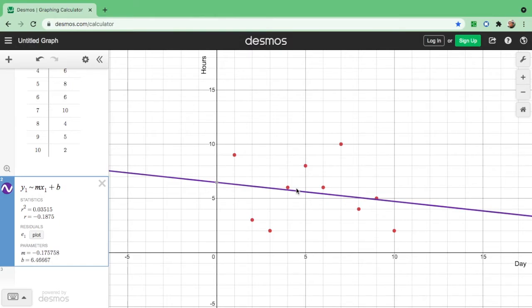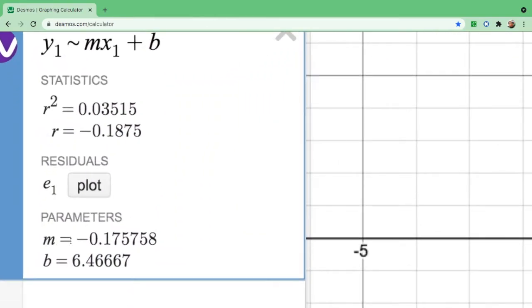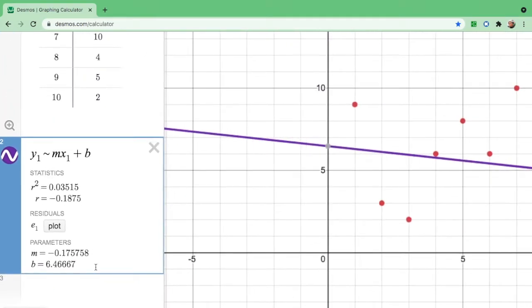Now, how will you find the equation? So I want you to look at the value of the slope, which is negative 0.0175758, and the y-intercept is at 6.46. So it is best to use two decimal places, round it off. So this will be negative 0.18. This will be your slope, and your y-intercept is 6.47.